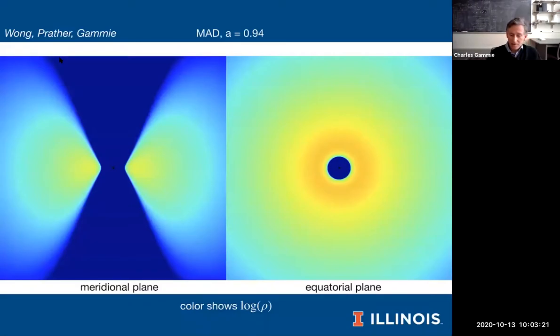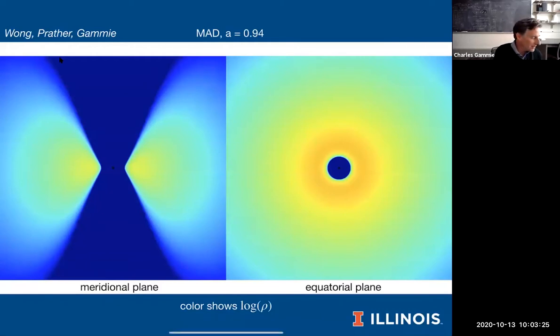I'm going to talk about general relativistic magnetohydrodynamic simulations. These are used in a number of contexts now: in neutron star research, in compact object merger calculations, and in black hole accretion. I'm really going to focus on the applications in black hole accretion, because that's what the PIRE is all about.